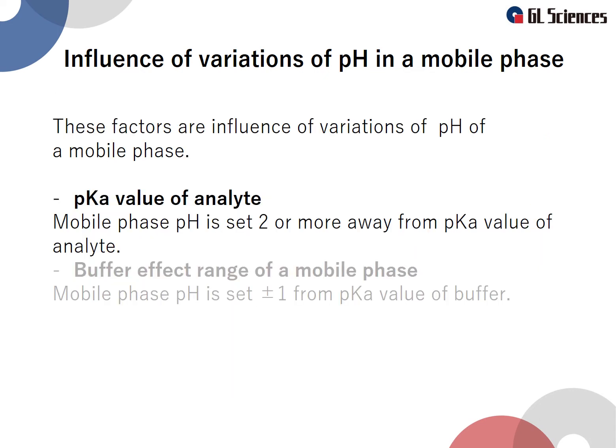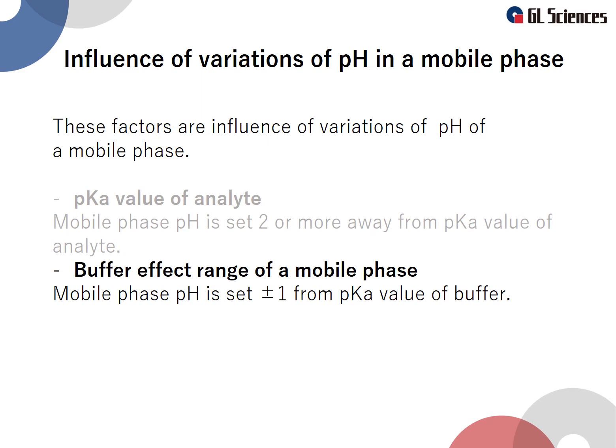We recommend setting the pH of the mobile phase in these ranges as much as possible. When focusing on your analyte, the mobile phase pH is set 2 or more above or below the pKa value of the analyte. When focusing on your buffer, the mobile phase pH should be between the pKa value minus 1 and the pKa value plus 1. Please make sure to note these two distinct guidelines.